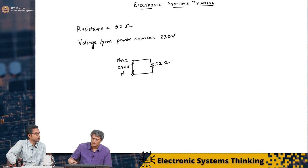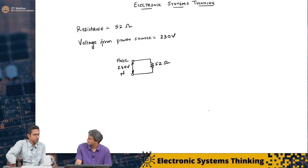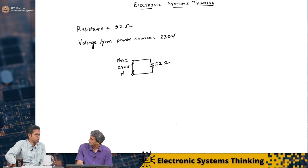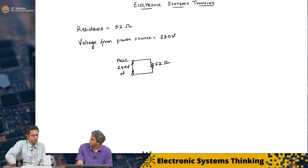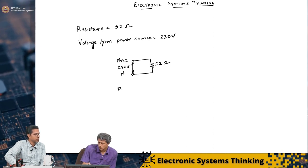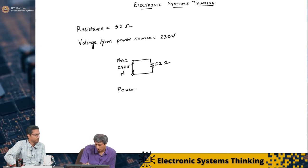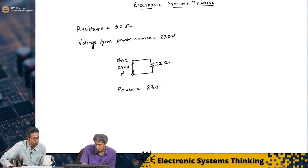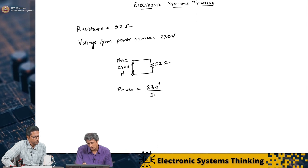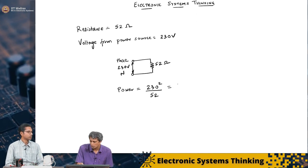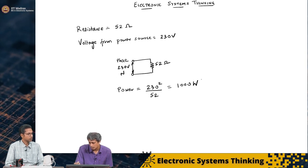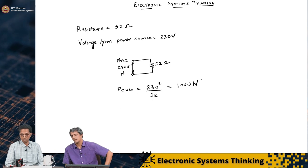Can you tell me how many watts this heater must consume? This I square R loss? Yeah. Which is V square by R? Yeah. So, 230 square by 52. Power is 230 square divided by 52. It is approximately 1000 watt.